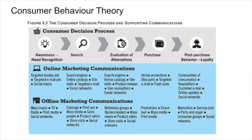In terms of the actual purchase, online we can do it through electronic connectivity, online promotions, discounts, targeted emails, and flash sales — all of these drive us to purchase online. In an offline environment, promotions, direct mail, mass media, and print media are common as well. From a post-purchase behavior perspective, once we've made the decision, we think about our communities of consumption — for example, Ford's web pages and the Ford Owners Group, or Harley's Owners Group — found in social media feeds or online forums. Customer emails, online updates, and social networks all provide post-purchase behavior information. From an offline world, warranty, service calls, parts and repair, consumer groups, and social networks influence what we think of our purchase.